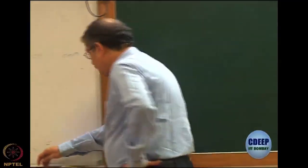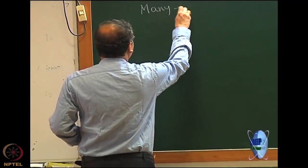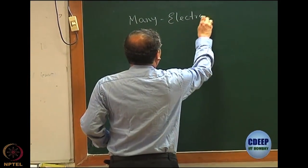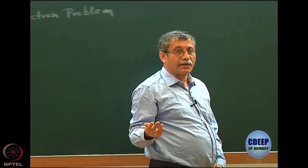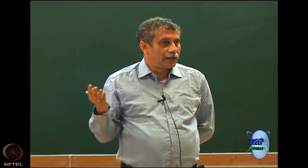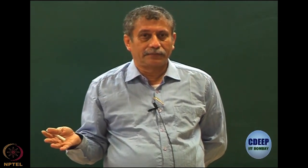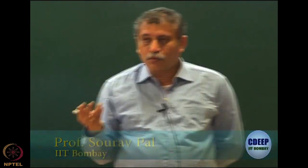We will start with the many-electron problem, or in general the quantum many-particle problem. We have revised basic quantum mechanics and the exactly solvable problems: particle in a box, harmonic oscillator, and hydrogen atom. If you go for more than one interacting electron, the problem is not exactly solvable and solutions are usually done through approximations. Two important approximations are the variation method and perturbation theory.